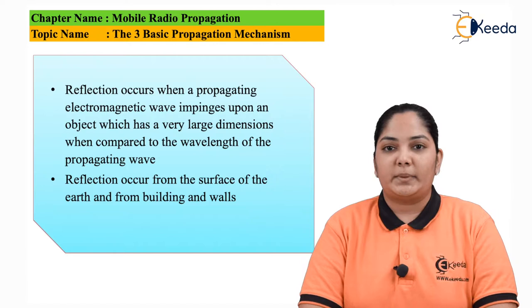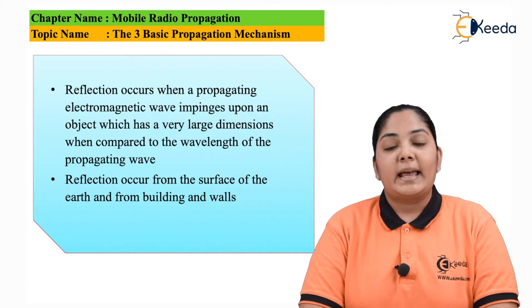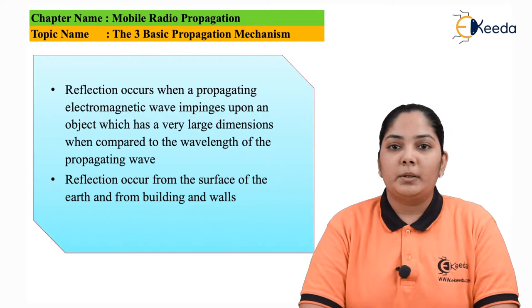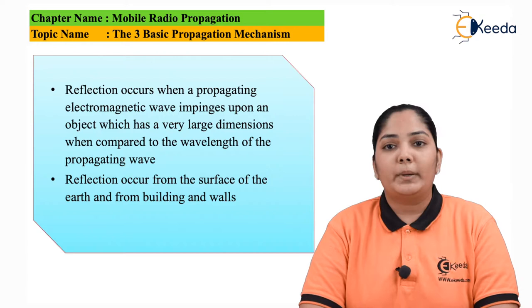Now let us understand what areas cause reflection. There are many such obstructions or objects through which reflection takes place — for example, buildings, trees, etc. These are the places through which reflection will occur and reach the receiver. The biggest surface through which reflection takes place is the ground or the earth's surface. Whenever electromagnetic waves travel in multiple paths, one wave gets reflected off the ground and then reaches the receiver. Hence, reflection is one of the important methods through which mobile radio propagation takes place, allowing radio waves from the mobile transmitter to reach the receiver.